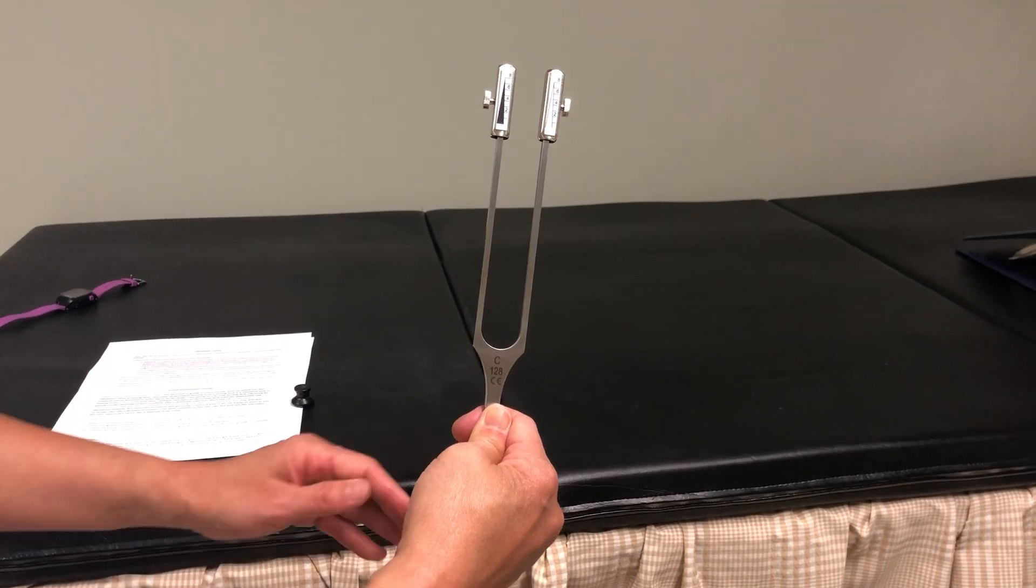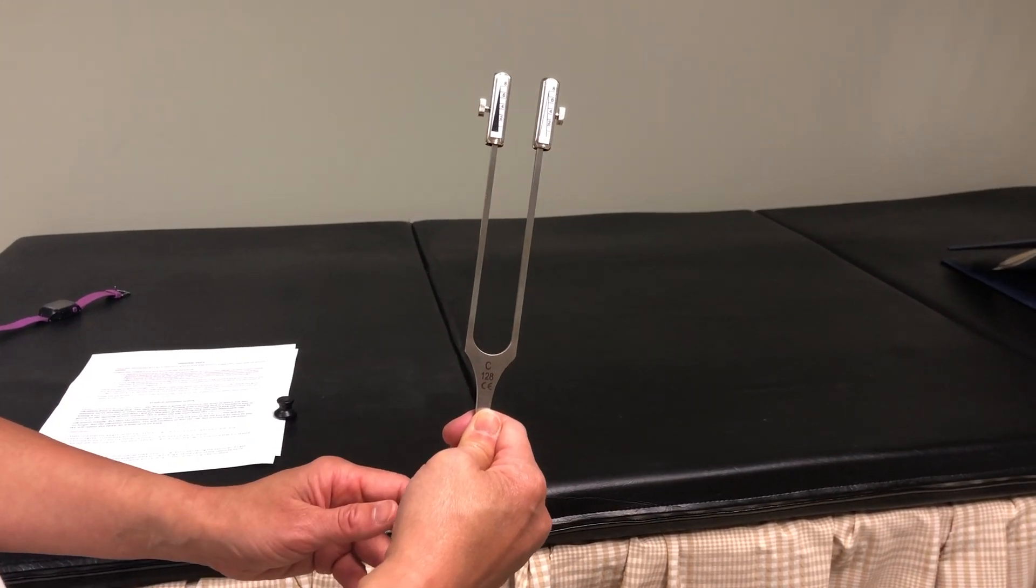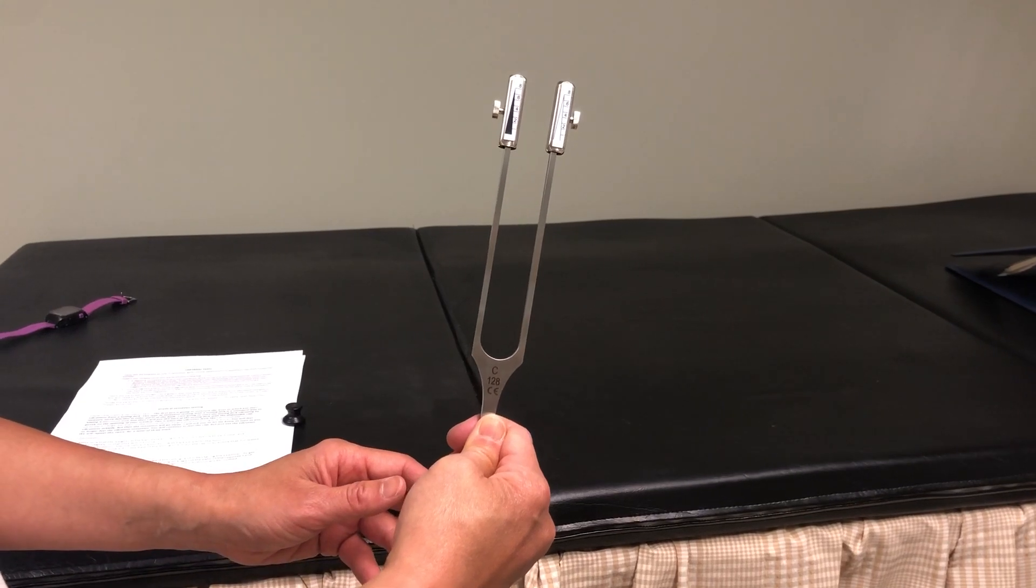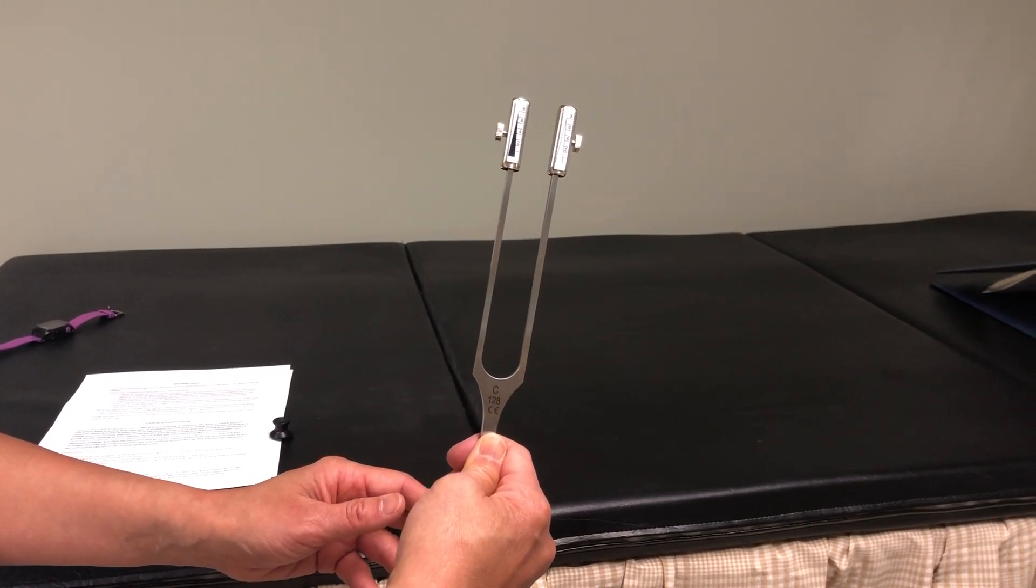The first test is going to measure the level at which you feel vibrations from a tuning fork. This type of sensation testing is a standard way to measure nerve function in parts of the body.